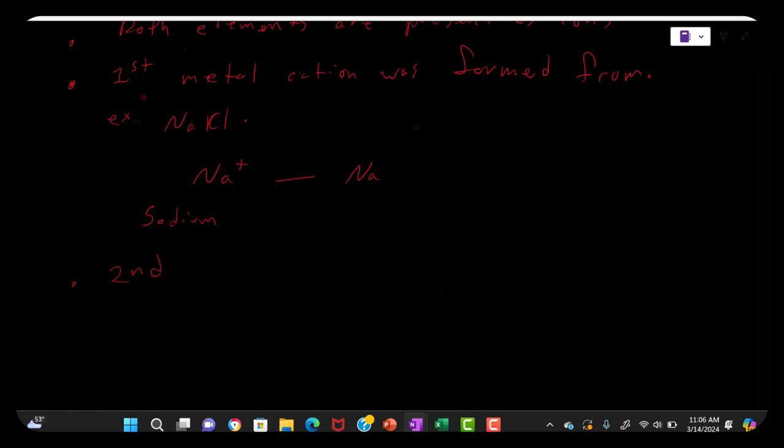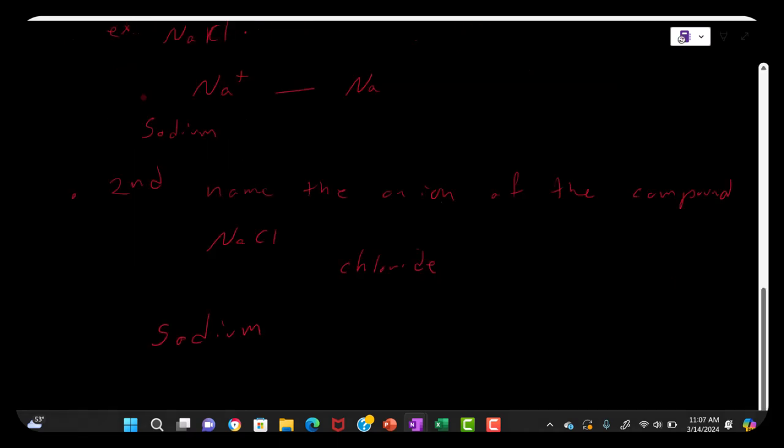The second part of the naming system would be to simply name the anion. So in sodium chloride, the anion would be chloride, so the name would be sodium chloride.